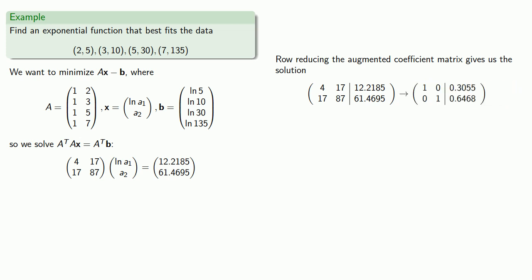And the thing to remember here is that what we're actually solving for are log of A1 and A2. So we know that the log of A1 is about 0.3055, and so that means A1 is e to this value, about 1.3574. And so that gives us our best fit exponential function.